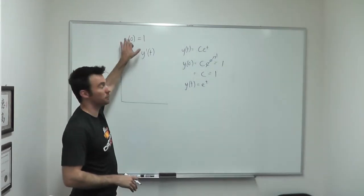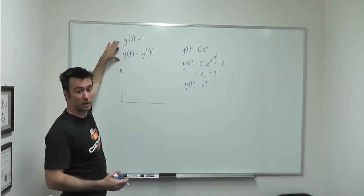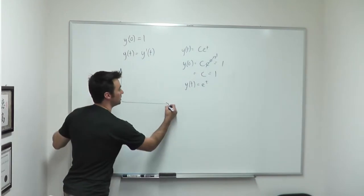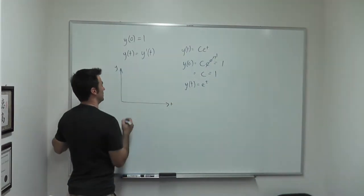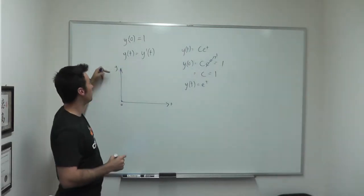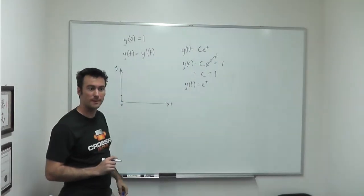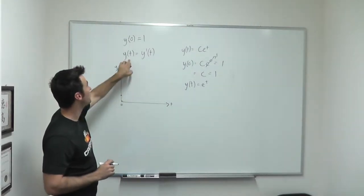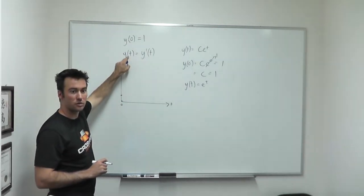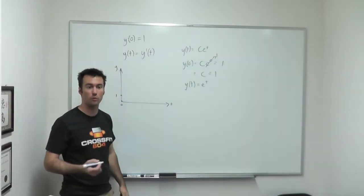The solution to our initial value problem is y(t) equal to e to the t — the constant has dropped out. We've gotten rid of the constant based on our initial condition. So in order to solve an initial value problem numerically, you start out at the initial condition. You say, here's my t and here's my y. My value of t is 0, and at time 0 my value of y is 1. So here's where I'm going to start out.